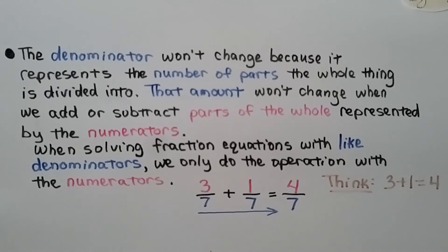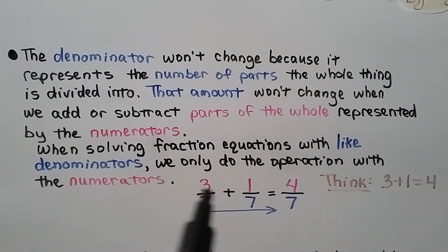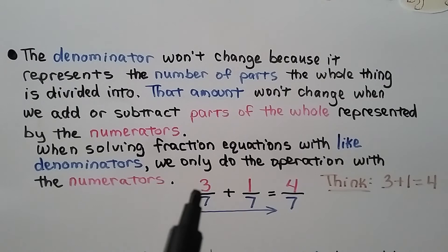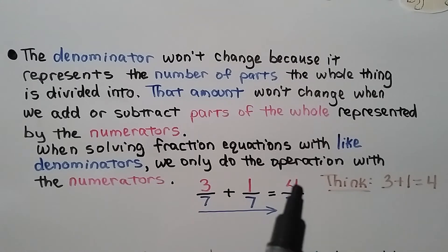The denominator won't change because it represents the number of parts the whole thing is divided into, and that amount won't change when we add or subtract parts of the whole represented by the numerators. When solving fraction equations with like denominators, we only do the operation with the numerators. For example, three-sevenths plus one-seventh: slide the seven over and think three plus one equals four — four-sevenths.